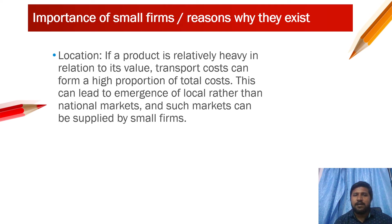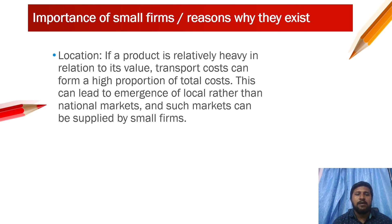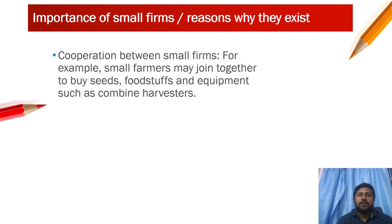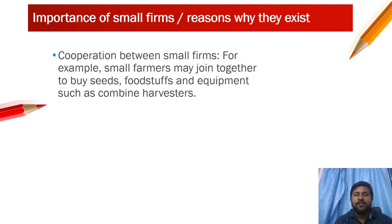Location is another reason. If a product is relatively heavy in relation to its value, transport costs can form a higher proportion of total cost. This can lead to the emergence of local rather than national markets, and such markets can be supplied by small firms only. Additionally, cooperation between small firms — for example, small farmers joining together to buy seeds, foodstuff, and equipment such as combine harvesters — can reduce costs, allowing them to enjoy economies of scale.